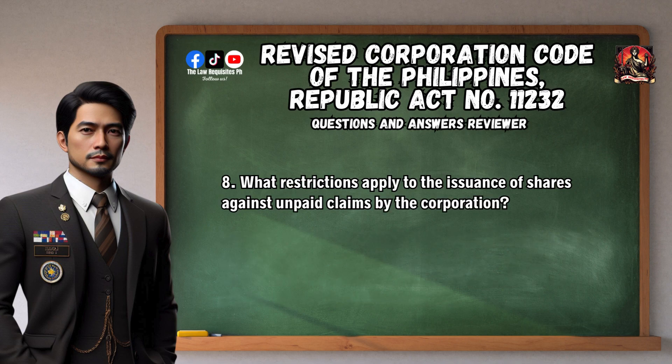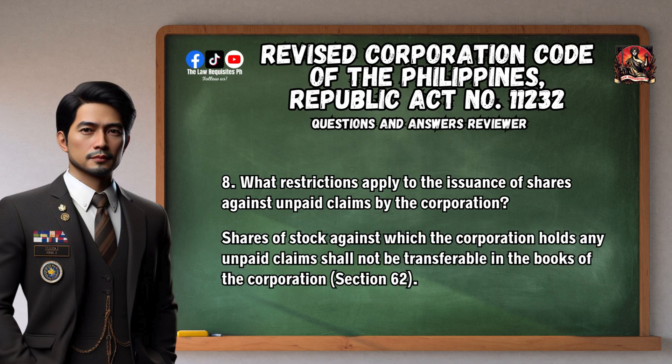Question 8: What restrictions apply to the issuance of shares against unpaid claims by the corporation? Shares of stock against which the corporation holds any unpaid claims shall not be transferable in the books of the corporation. Section 62.